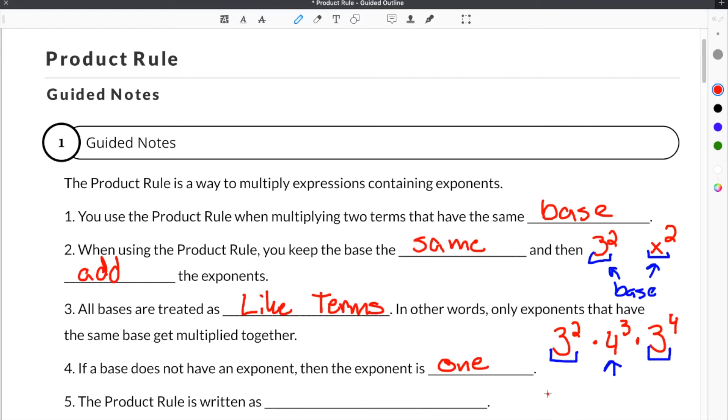If you had 3 times 3 to the fourth, even though there's no exponent here, the exponent is 1. And then the product rule is written as x to the a times x to the b is equal to x to the a plus b.